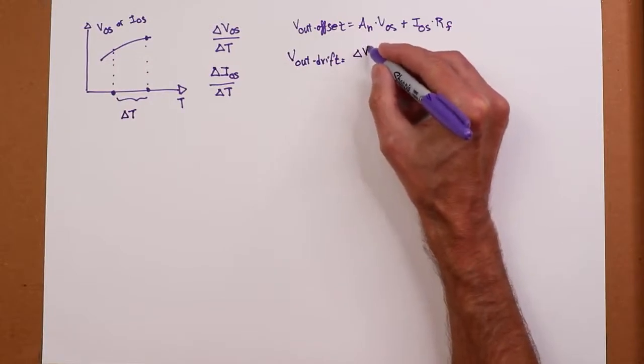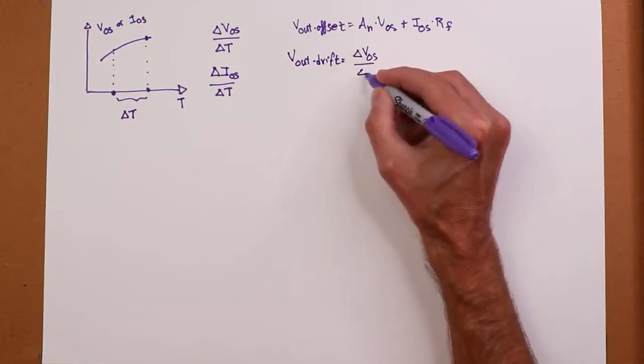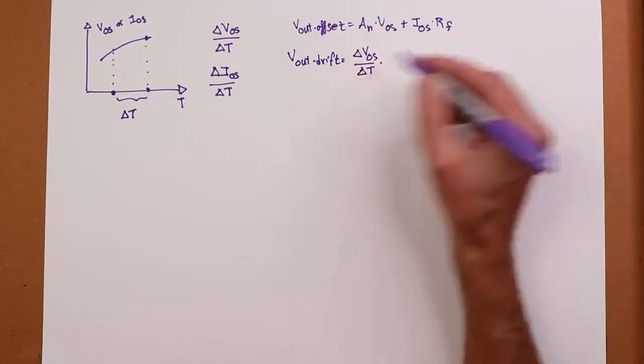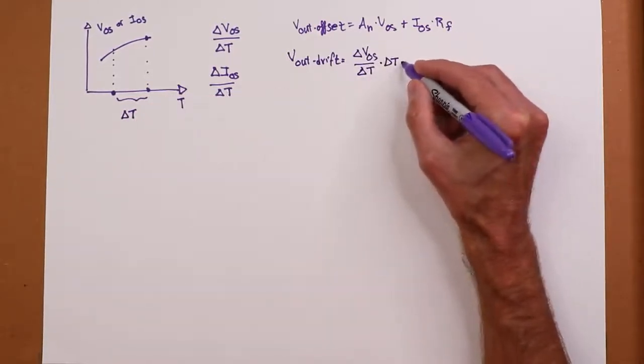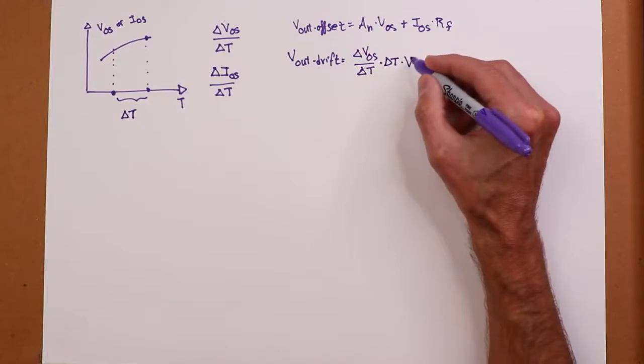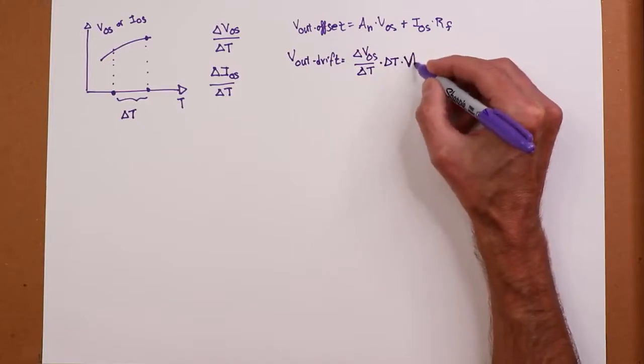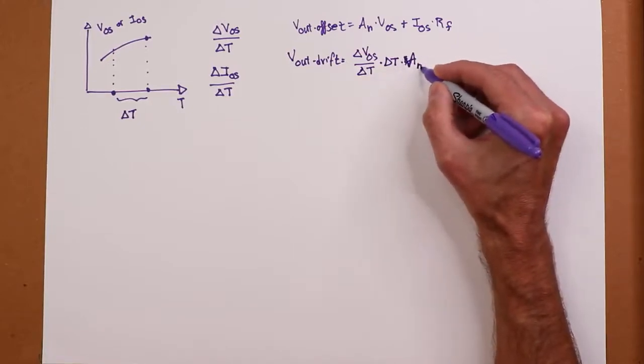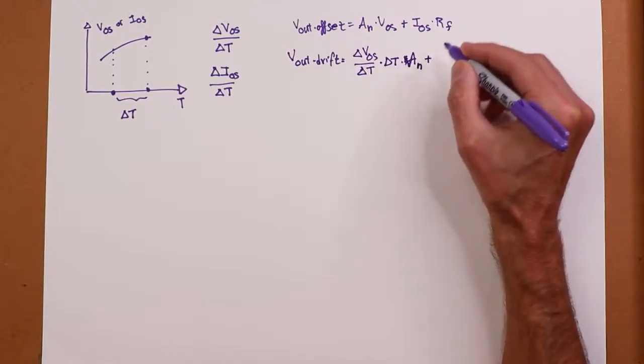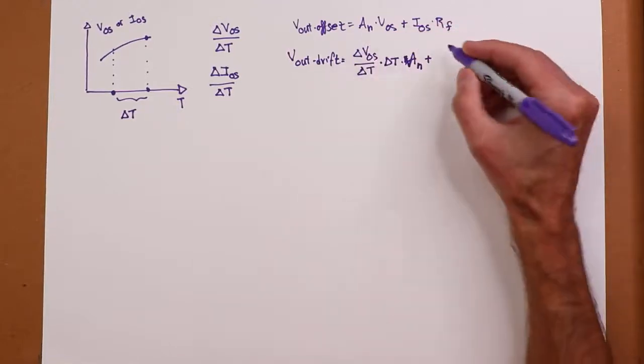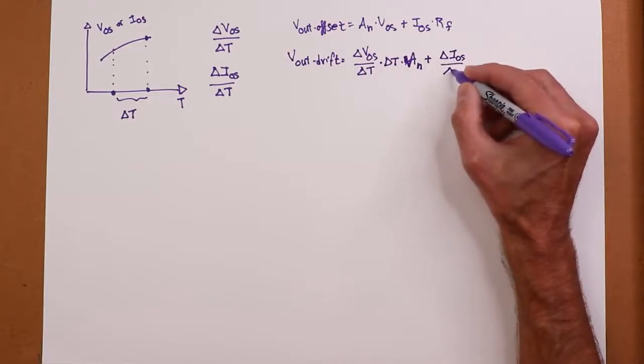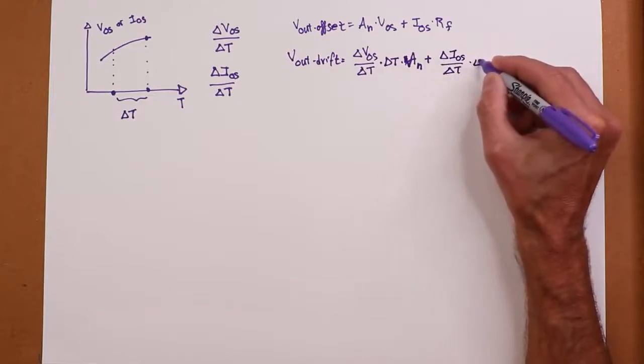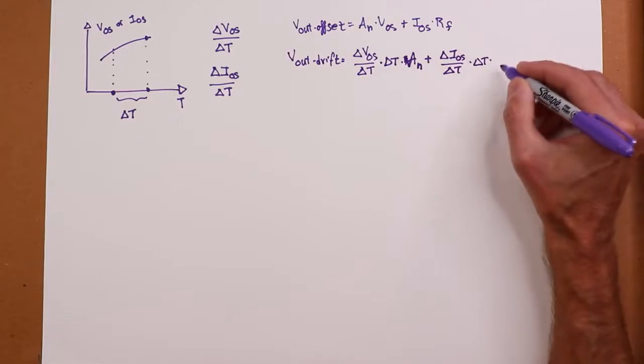So we can write it like this. It's delta V_OS delta T, remember that's one number, times the actual delta T times A_N, excuse me, times your noise gain. And then the I_OS, same sort of deal. It's delta I_OS delta T times your delta T times the R_F.